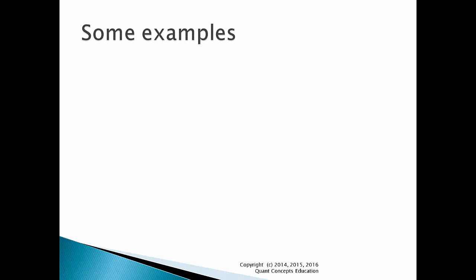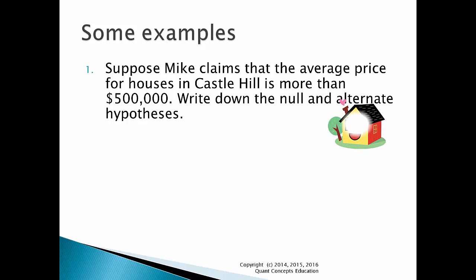Let's go through some examples for practice. Suppose Mike claims that the average price for houses in Castle Hill is more than $500,000. Write down the null and alternate hypotheses. Now let's write down the claims. Mike states that the average house price, mu, is more than $500,000. Note that his claim is that it's more than, not more than or equal to. The counterclaim — that is, the complete opposite of this — is that mu is less than or equal to $500,000.